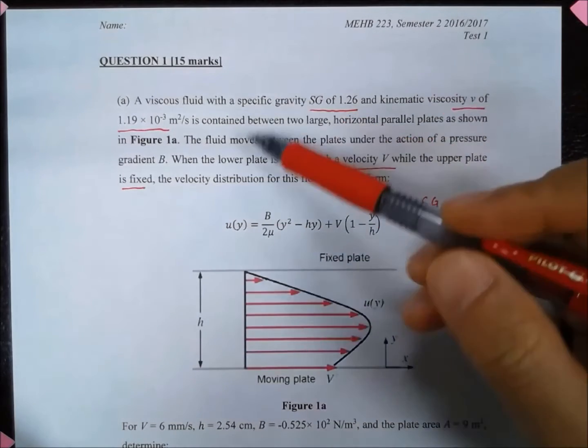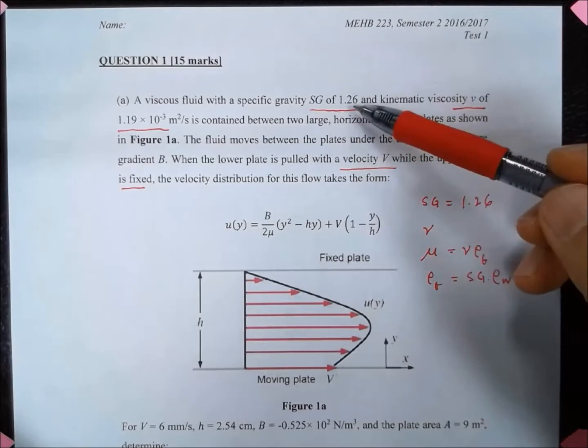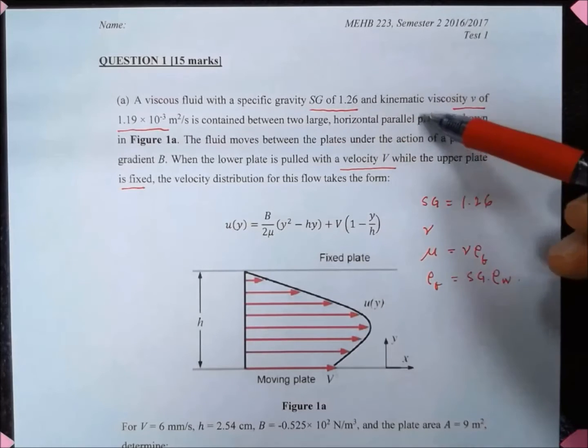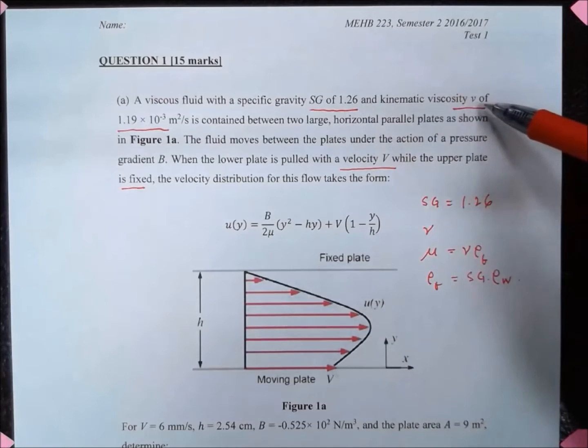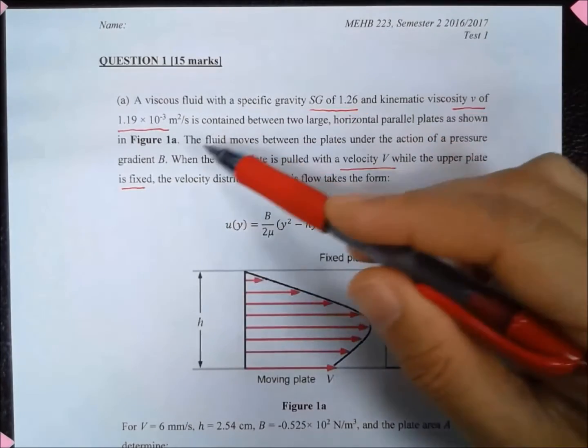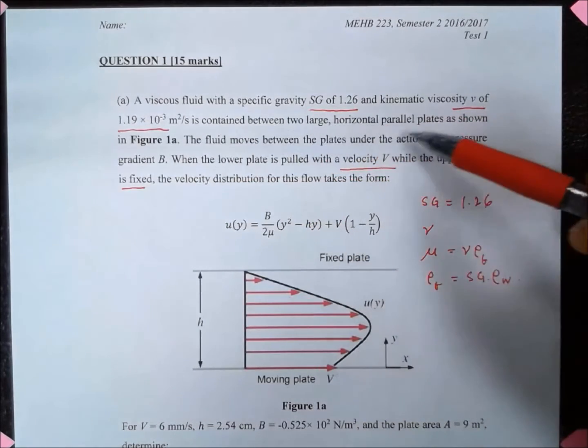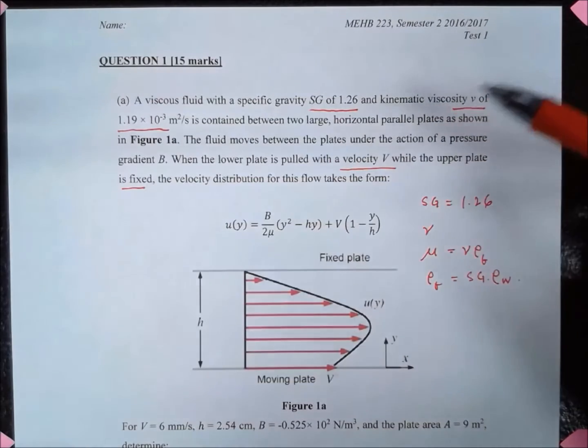Here we have a viscous fluid with specific gravity St equal to 1.26 and kinematic viscosity nu of 1.19 times 10 to the minus 3 m² per second, contained between two large horizontal parallel plates as shown in the figure.